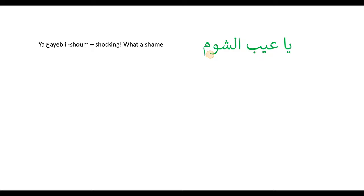Our third phrase is 'ya'ayb shum.' This is widely used in dialect. We use it to express disappointment towards something — when somebody has done something and you find it absolutely shocking or unbelievable.